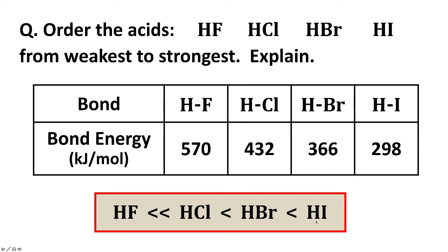And actually in water, HCl, HBr and HI all are strong acids, 100% dissociated. HF is the only one of these four that is a weak acid in water as a solvent.